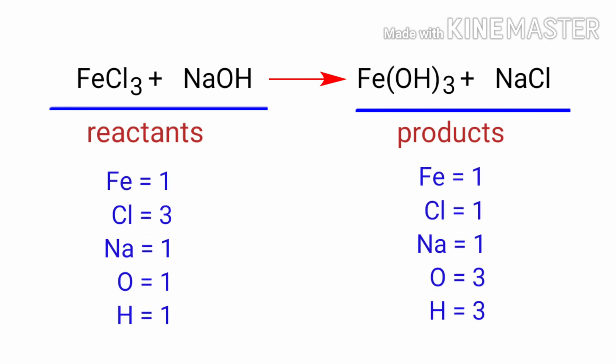If you look at this equation, the equation is not balanced. On the reactants side, there are one Iron atom, three Chlorine atoms, one Sodium atom, one Oxygen atom, and one Hydrogen atom. On the products side, there are one Iron atom, one Chlorine atom, one Sodium atom, three Oxygen atoms, and three Hydrogen atoms. The number of atoms are not balanced on both sides.